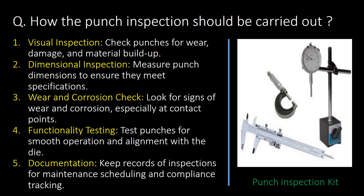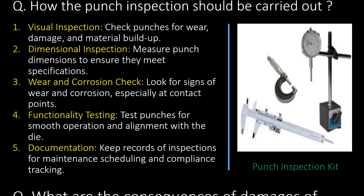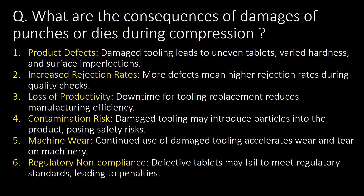How should punch inspection be carried out? Here are the 5 steps that should be covered under the punch inspection procedure: 1) Visual inspection, 2) Dimensional inspection, 3) Wear and corrosion check, 4) Functionality check, and 5) Documentation.